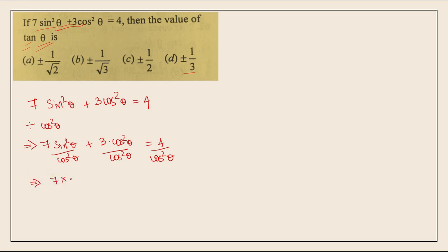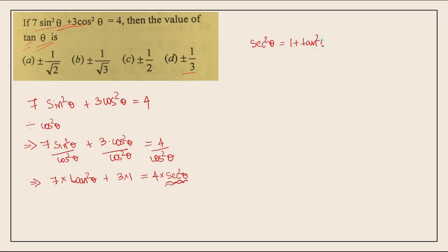Dividing through by cos²θ: 7 times sin²θ by cos²θ gives 7tan²θ. Plus 3 times cos²θ by cos²θ gives 3. And 4 divided by cos²θ gives 4 times 1 by cos²θ, which is 4sec²θ, equal to 4 into bracket 1 plus tan²θ.